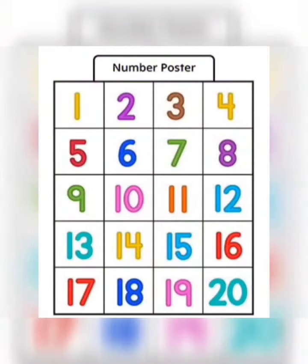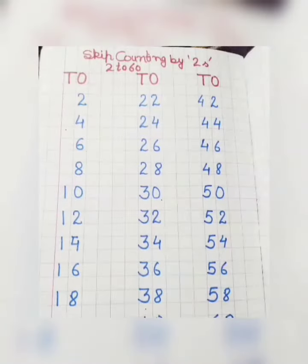In numbers, it will jump in numbers. So what do you need to do with skip counting? 2 to 60 counting is like this. Formation should be like this, format should be like this. Full box use hona chahiye.